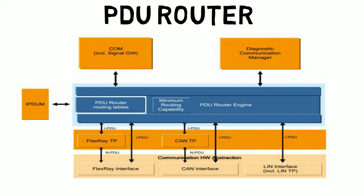The router can be split into two parts: the PDU router with PDU routing table, and the PDU router engine. In VSW configuration, the PDU routing table will be configured. These are the set of PDUs that come out of the COM modules, at what rate they have to be transferred, and which set of IPDUs have to be sent to the CAN and which to the LIN or other buses.